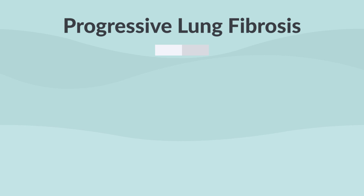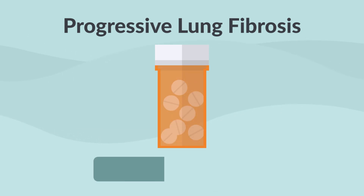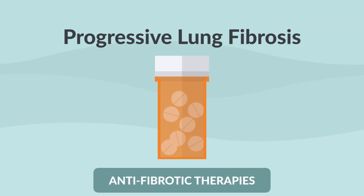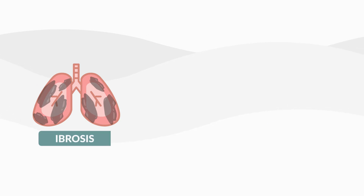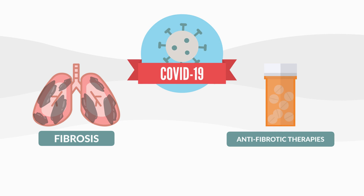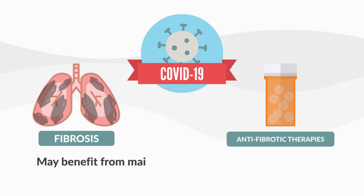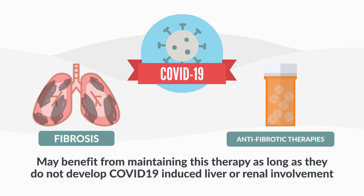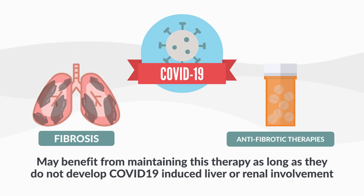In those patients with progressive lung fibrosis, antifibrotic therapies may be novel approaches for prevention of this potentially lethal complication. Patients with lung fibrosis, such as idiopathic pulmonary fibrosis, on antifibrotic therapy that develop COVID-19 may benefit from maintaining this therapy, as long as they do not develop COVID-19-induced liver or renal involvement, which are contraindications to antifibrotic therapy.